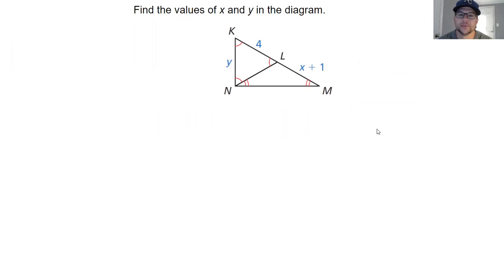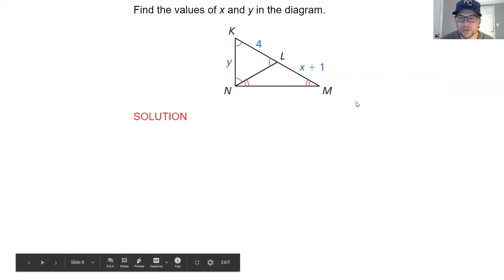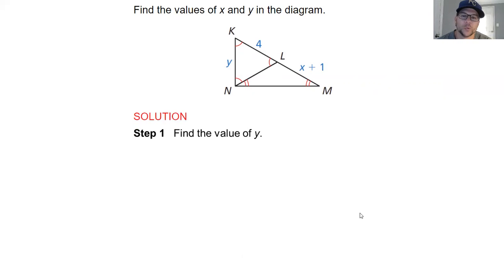Now putting some algebra in this diagram, we're looking to find the values of X and Y based on these two different triangles that are put together to form one larger triangle. So first we'll go ahead and look at the value of Y. The reason why we do that is it's a little less complicated to use the 4 instead of the X plus 1. You could use the X plus 1 first if you wanted, but we're going to use the Y.